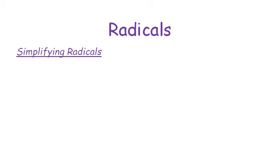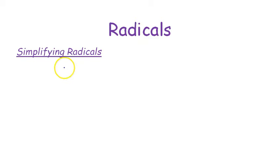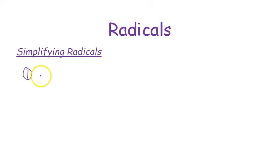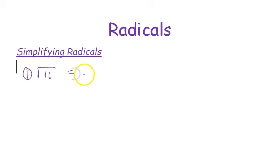This lesson is about radicals and how to simplify them. The first example is the square root of 16. Most would jump to 4, but it can also be negative 4, so technically the answer is both 4 and negative 4.